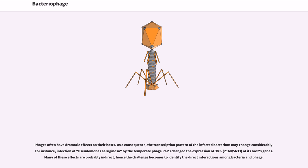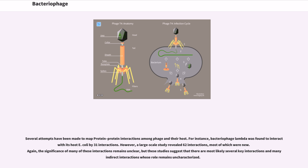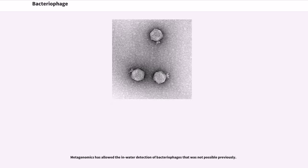Phages often have dramatic effects on their hosts. The transcription pattern of infected bacteria may change considerably — for instance, infection of Pseudomonas aeruginosa by the temperate phage PA-P3 changed the expression of 38% (2,165 of 5,633) of its host genes. Several attempts have been made to map protein-protein interactions among phage and their hosts. Bacteriophage lambda was found to interact with its host E. coli by 31 interactions; however, a large-scale study revealed 62 interactions, most of which were new, suggesting several key direct interactions and many indirect interactions whose roles remain uncharacterized.